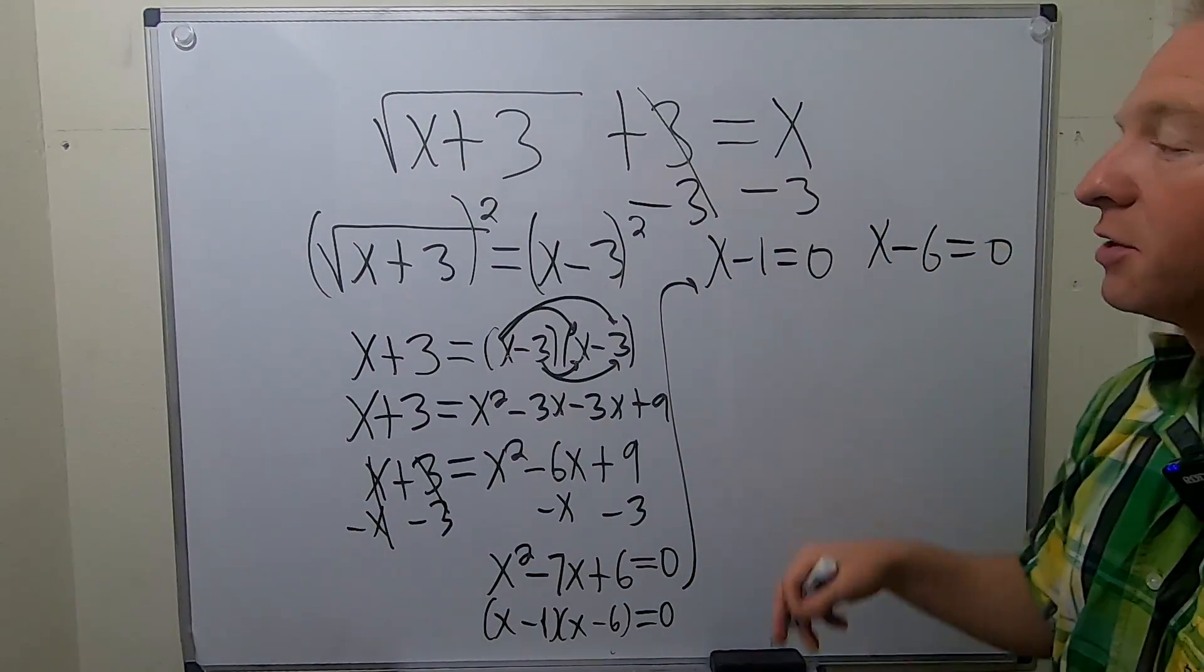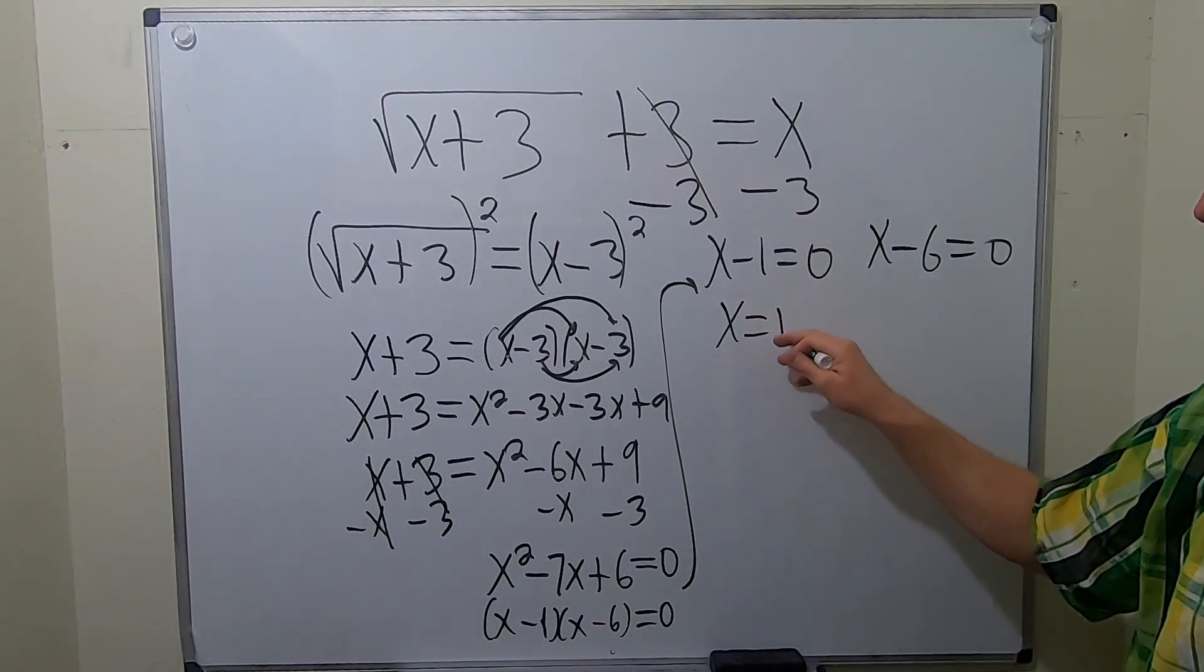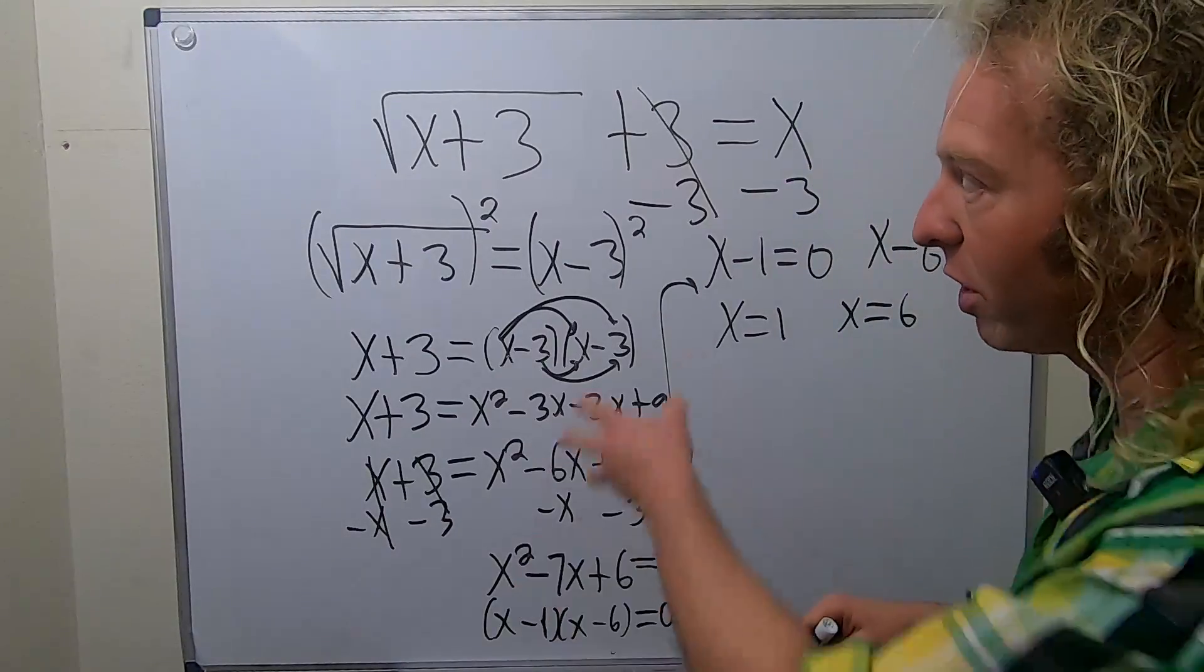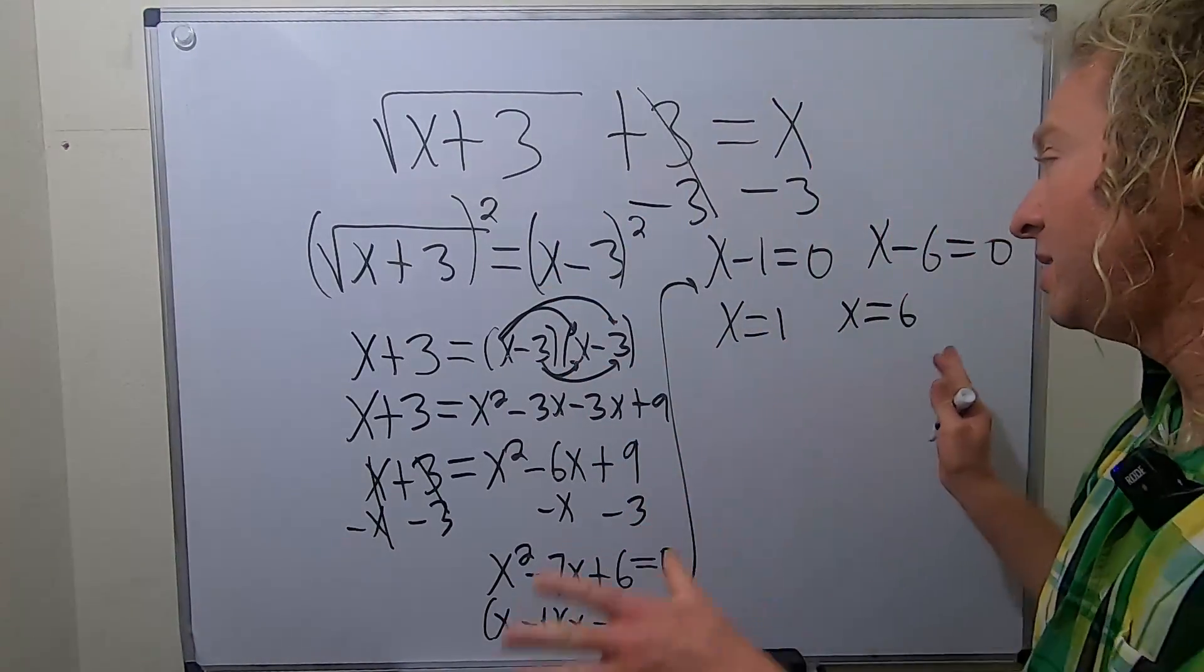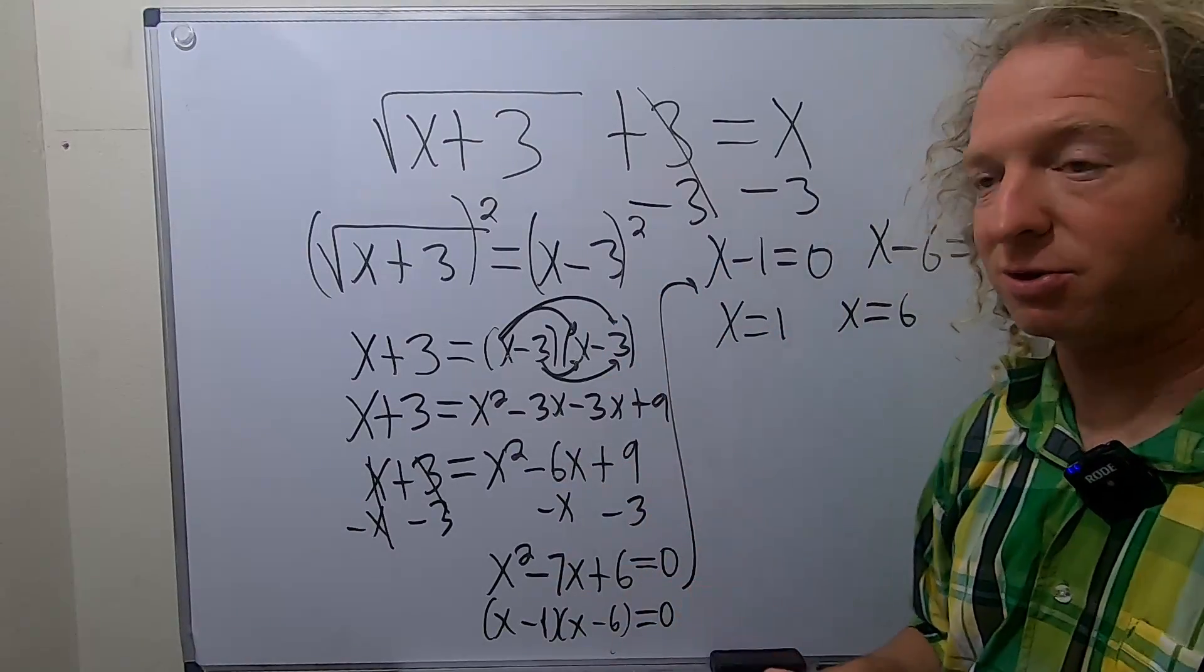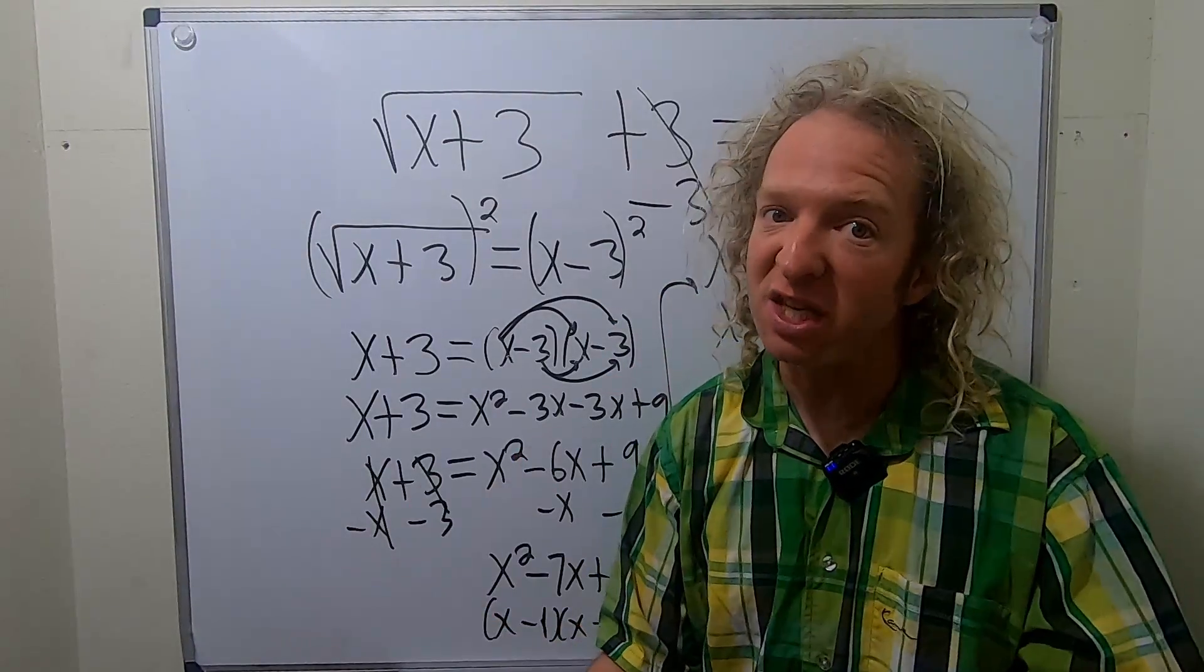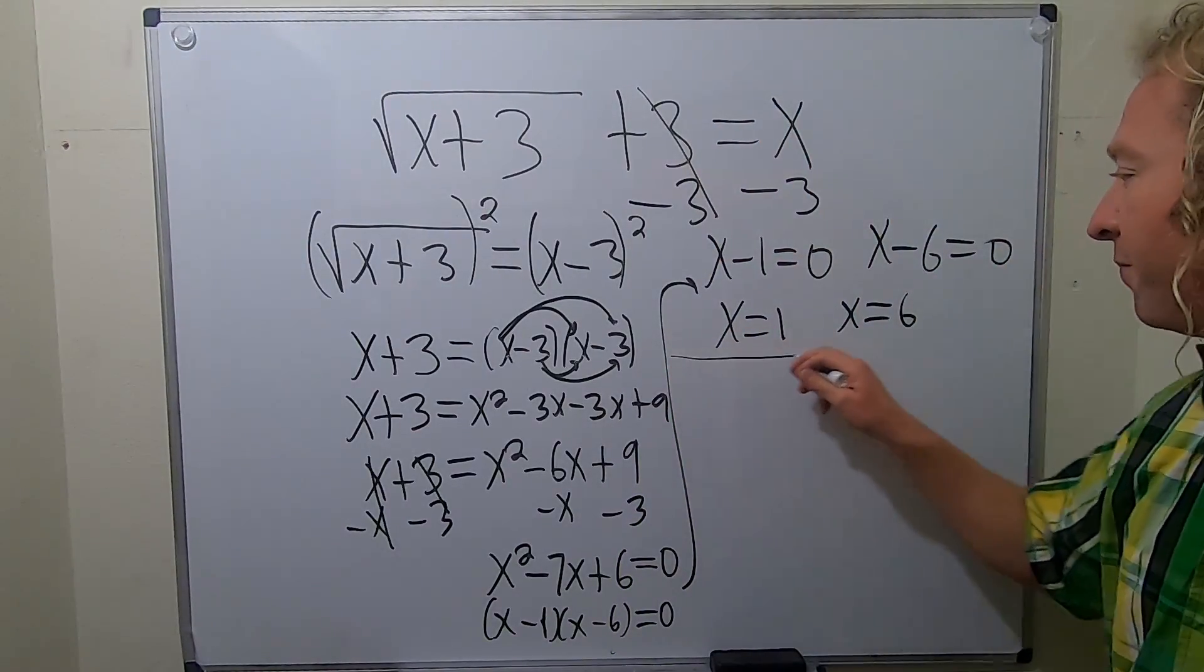Really nice problem, and so we get two possible answers - we get 1 and we get 6. Now I say possible because whenever you have a square root in an equation, you should always check your answers. These might not both be the answers, they might both be the answer, maybe one of them is the answer, maybe none of them is the answer. We're supposed to check.